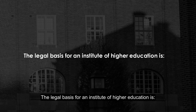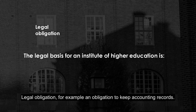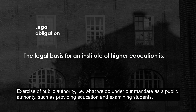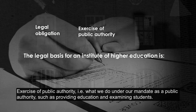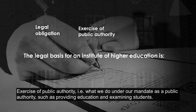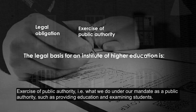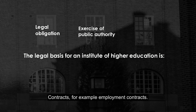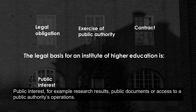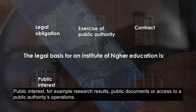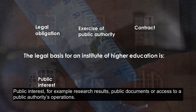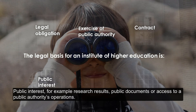The legal basis for an institute of higher education includes legal obligation, for example an obligation to keep accounting records; exercise of public authority, such as providing education and examining students; contracts, for example employment contracts; and public interests, for example research results, public documents or access to public authorities' operations.